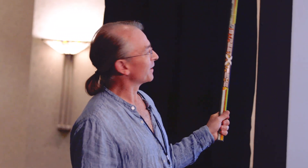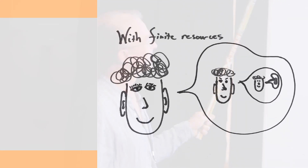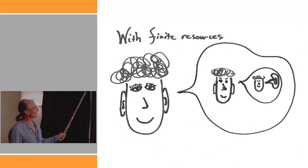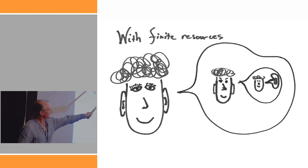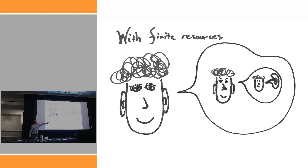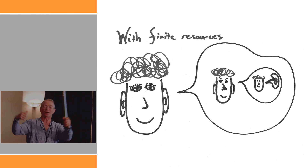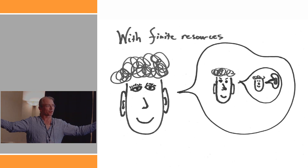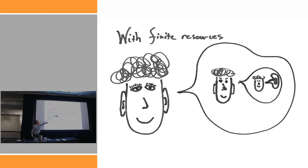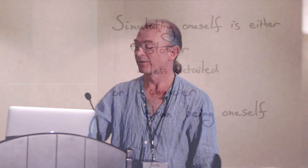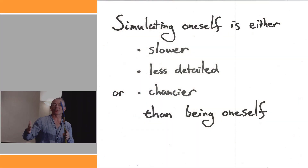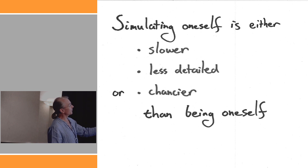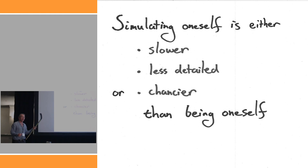There's a finite system version of this as well, applying to finite automata. Consider someone trying to model what decisions they're going to make — they make a model of themselves, which recursively makes another model, and so on. For a finite system, you cannot model yourself exactly, because you're devoting fewer resources to the model than you actually have — fewer degrees of freedom. The model becomes more coarse-grained and cartoonish the further down you go. Even for finite systems, you cannot predict what you're going to do.